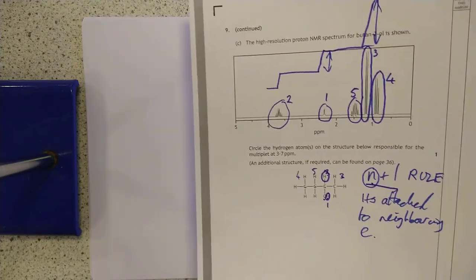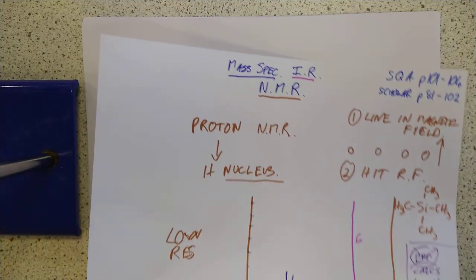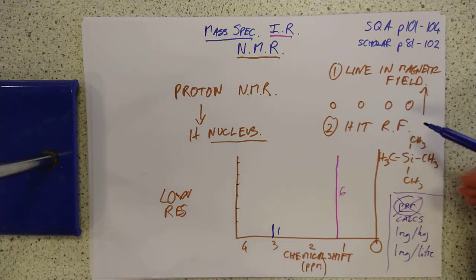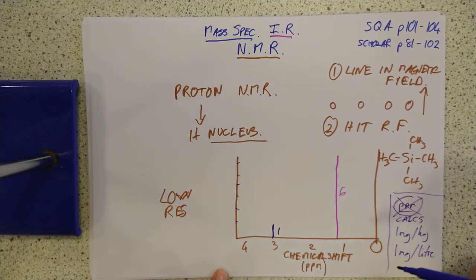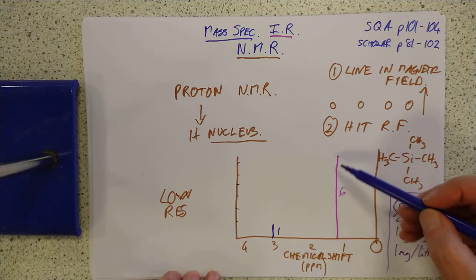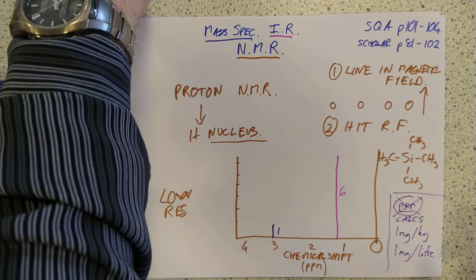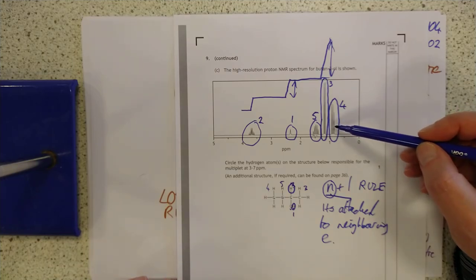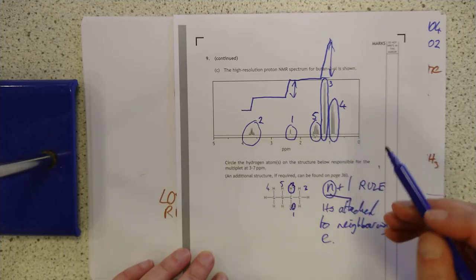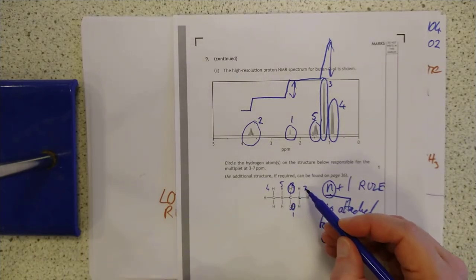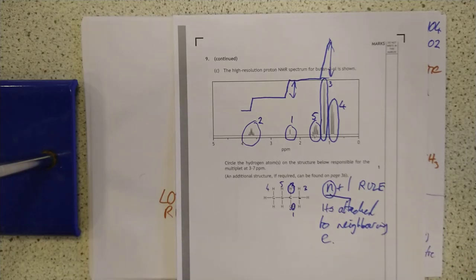Summary: nuclear magnetic resonance is based on hydrogen nuclei — the protons. Line them up in a magnetic field, hit them with radio frequency energy, they flip and give out energy we can measure. Low-resolution NMR gives a spike for each hydrogen environment; the spike height relative to others is proportional to the number of those hydrogens. High-resolution NMR splits each spike into N plus 1 sub-peaks, where N is the number of hydrogens attached to the neighbouring carbon. Thank you very much for listening.